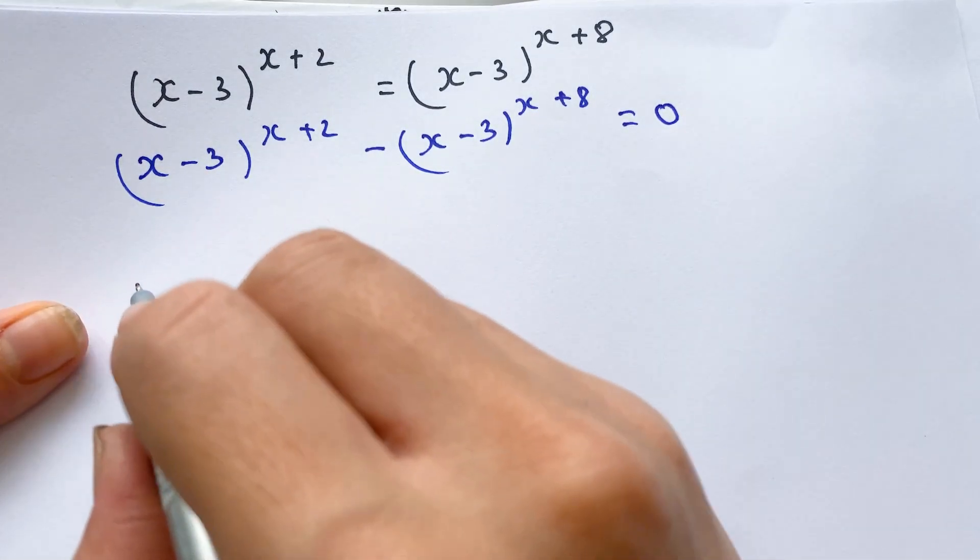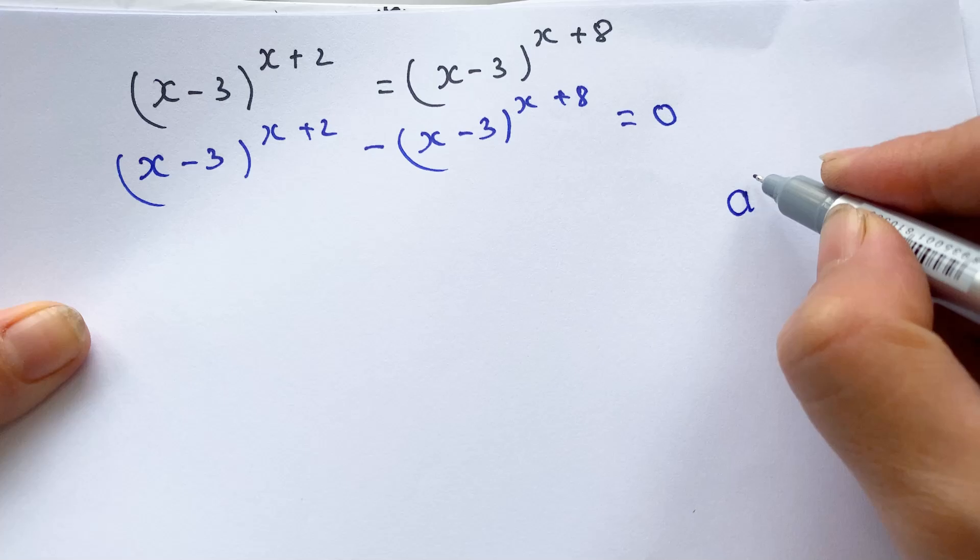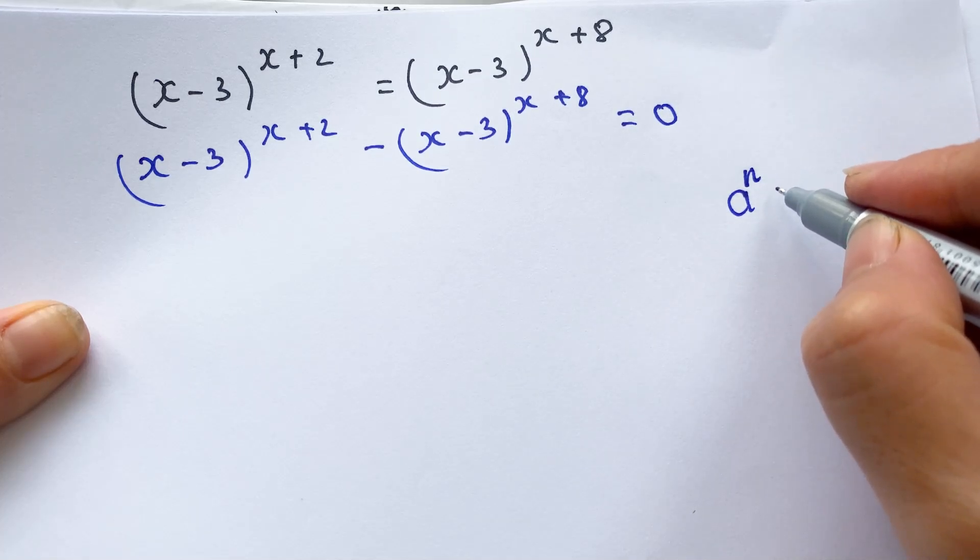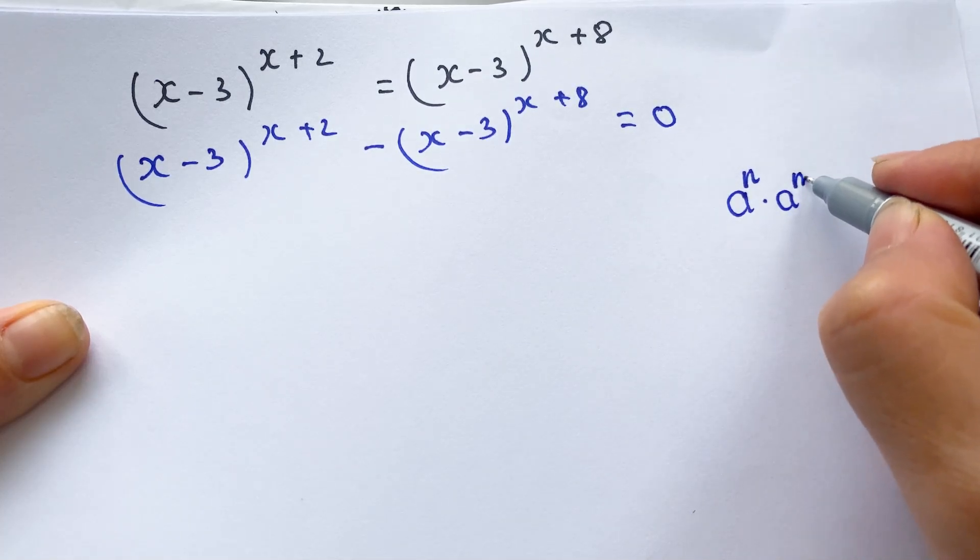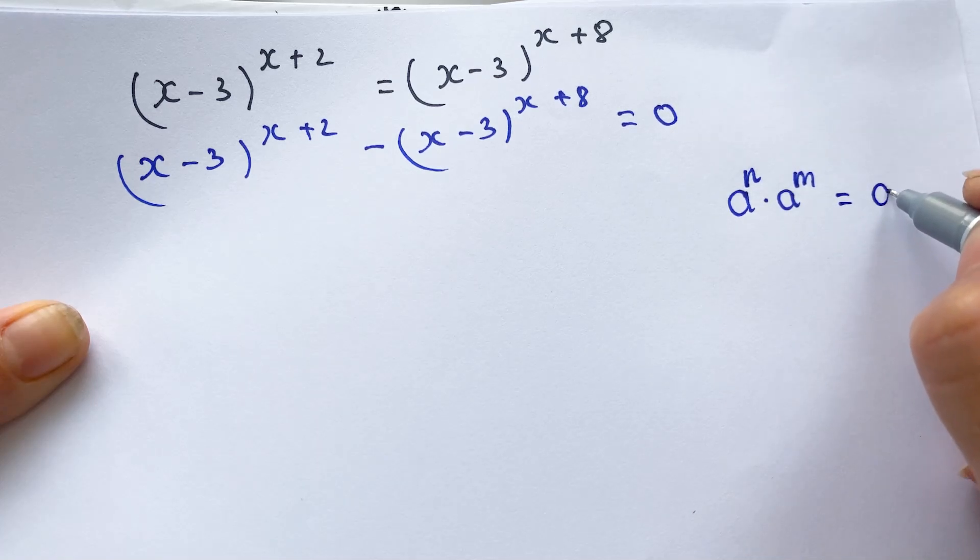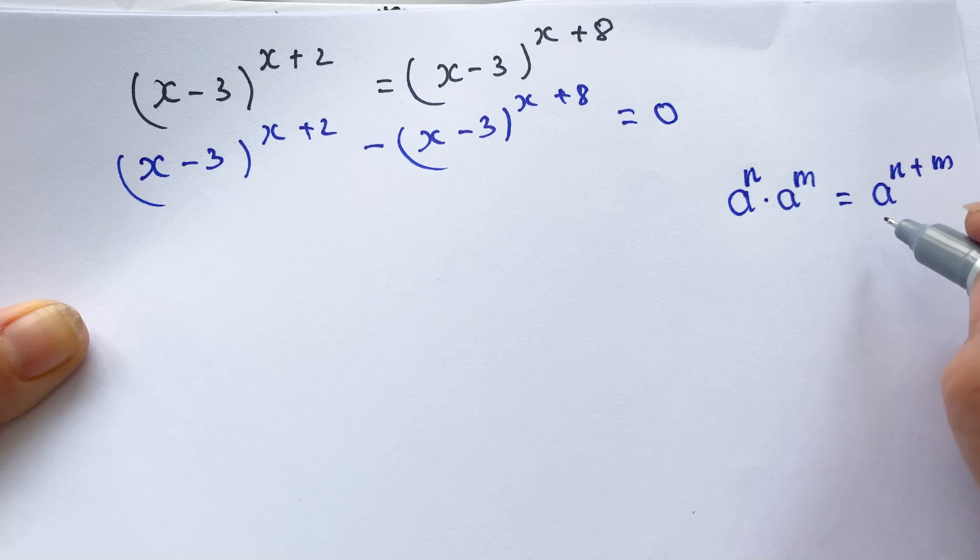And then, everyone can see a^n times a^m equals a^(n+m) is the properties of exponent. So, therefore...